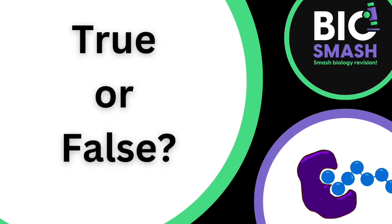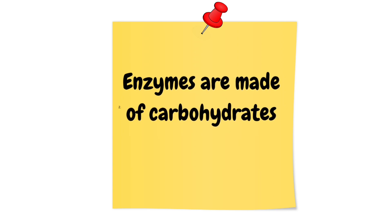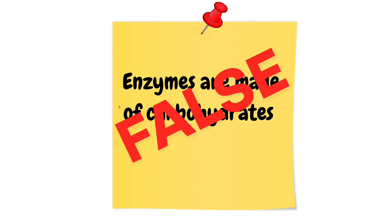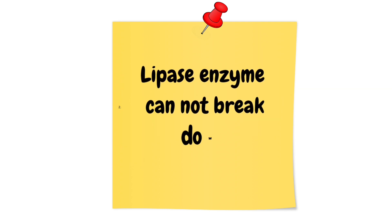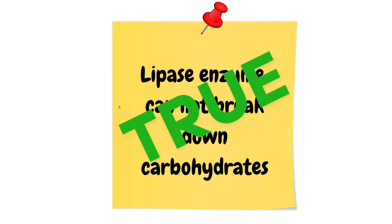It's time for our quiz to check how much you've remembered and understood. I'll show you some statements — for each one, decide if it's true or false. Question 1: true or false — enzymes are made of carbohydrates? That statement is false. Enzymes are made of protein. Statement 2: lipase enzymes cannot break down carbohydrates — true or false? That one's true. Lipase enzyme breaks down lipids; carbohydrase breaks down carbohydrates, because each enzyme is specific — its active site is a different shape to match one particular substrate.